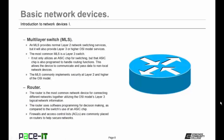Then we have the multi-layer switch, or MLS. An MLS provides normal Layer 2 network switching services, but it will also provide Layer 3 or higher OSI model services. The most common MLS is called a Layer 3 switch. It not only utilizes an ASIC chip for switching, but that ASIC chip is also programmed to handle routing functions. This allows the device to communicate and pass data to non-local network devices.